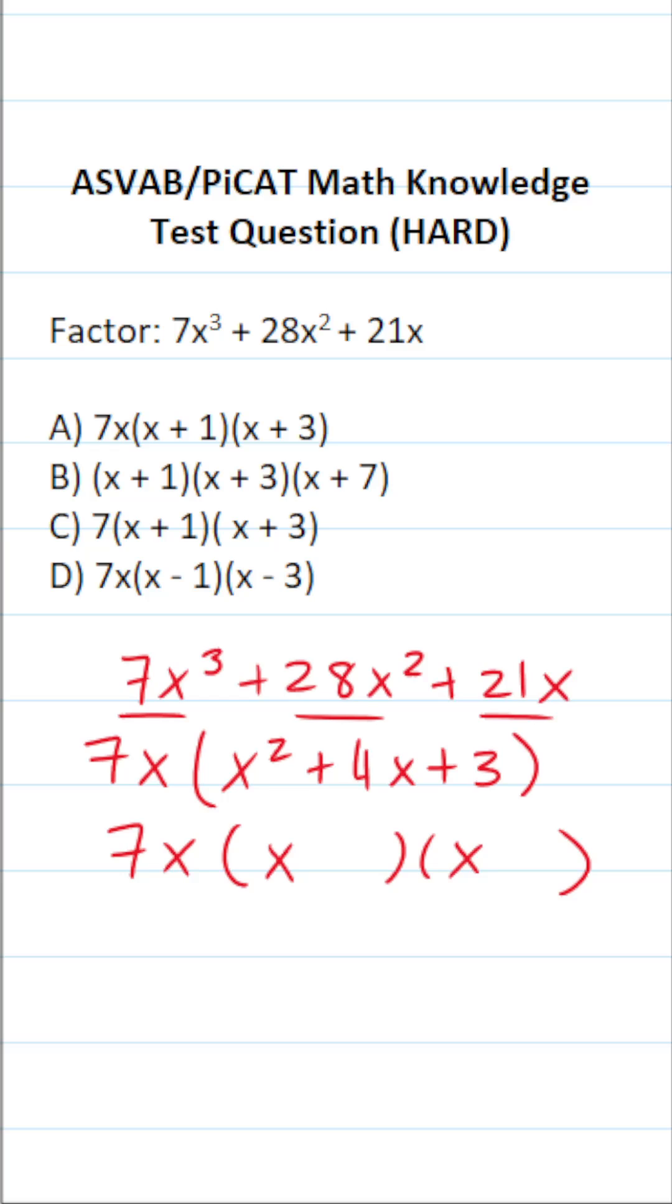Now, we're looking for two numbers that multiply to positive 3 but add to 4. It's really only one set of numbers that meets that criteria, notably 1 and 3.